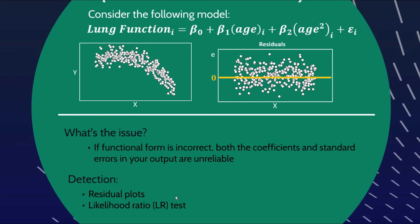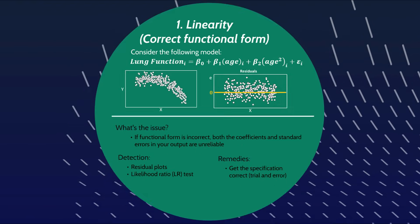Another thing you can do is a likelihood ratio test, which I'm not going to go into here, but I will put together a separate video that delves into this more deeply. Appreciate that there are statistical measures that compare the goodness of fit of distinct models — you can compare the model using just age to the model using age and age squared using a likelihood ratio test. To solve this problem, you've just got to get the specification correct, and that might take some trial and error.